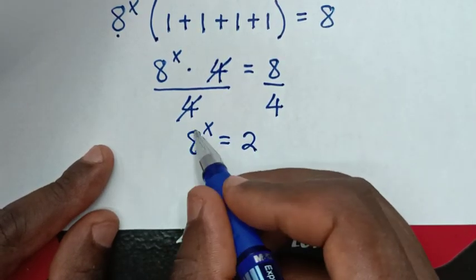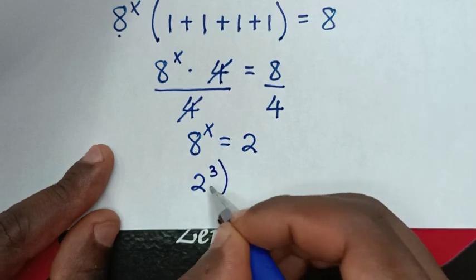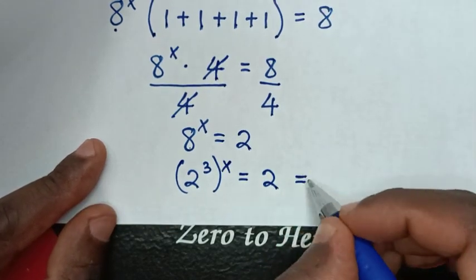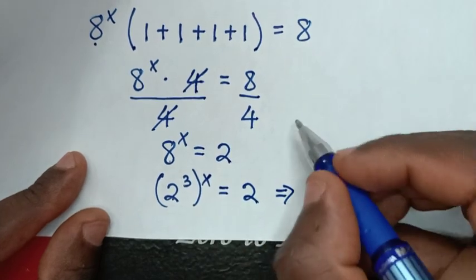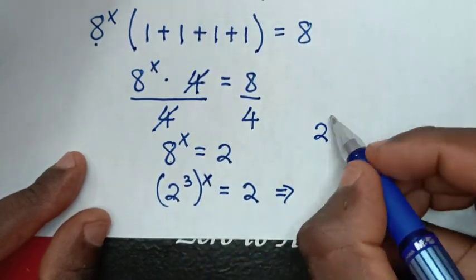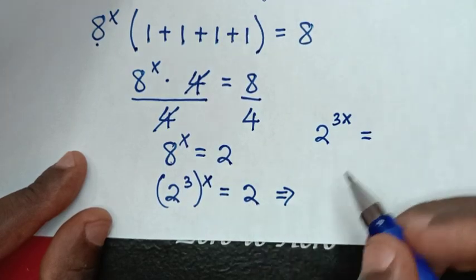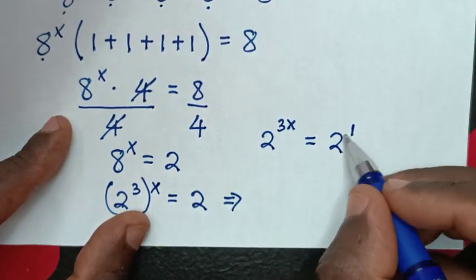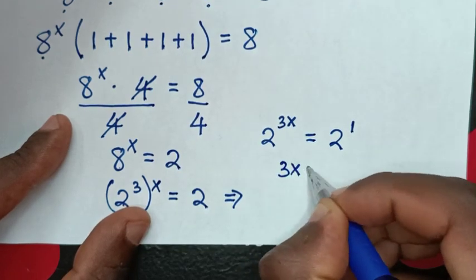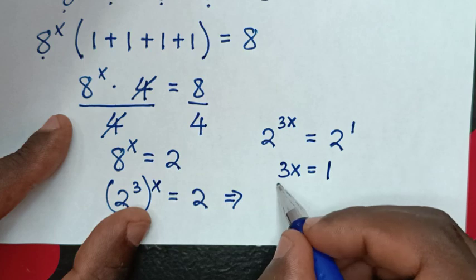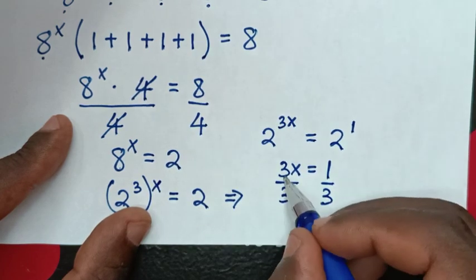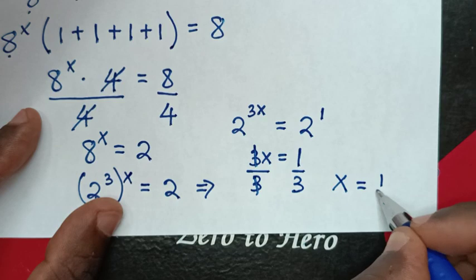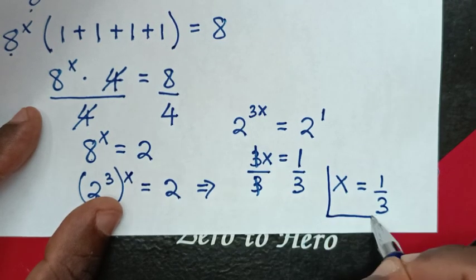To convert to base 2: 8 is the same as 2 power 3, so bracket power x gives 2 power 3x. And 2 is 2 power 1. So 2 power 3x equals 2 power 1. Since we have the same base of 2, we compare the powers: 3x equals 1. Dividing by 3 on both sides gives x equals 1 over 3.